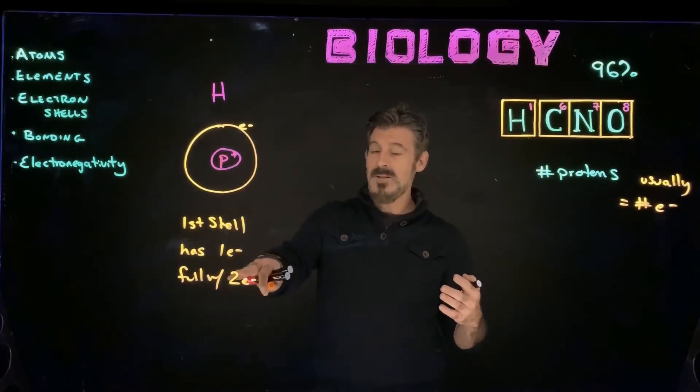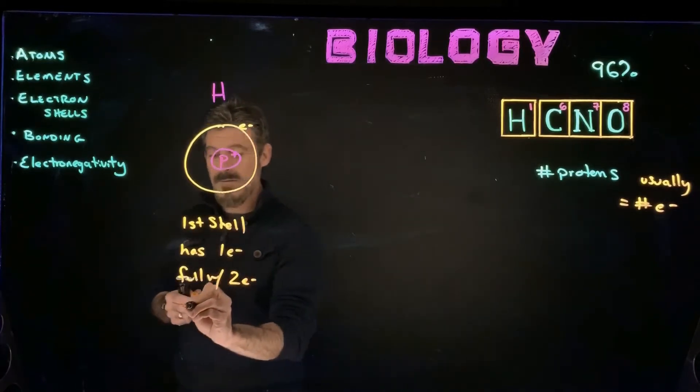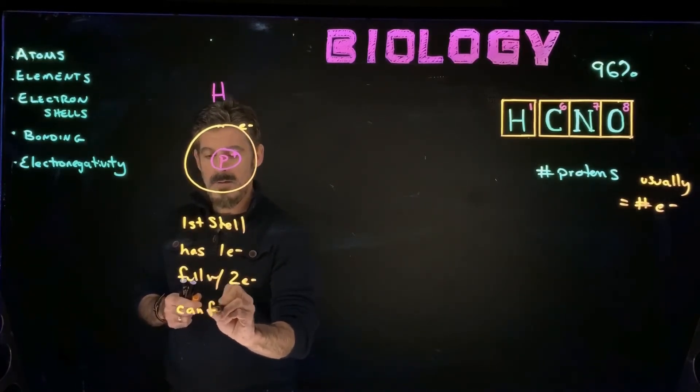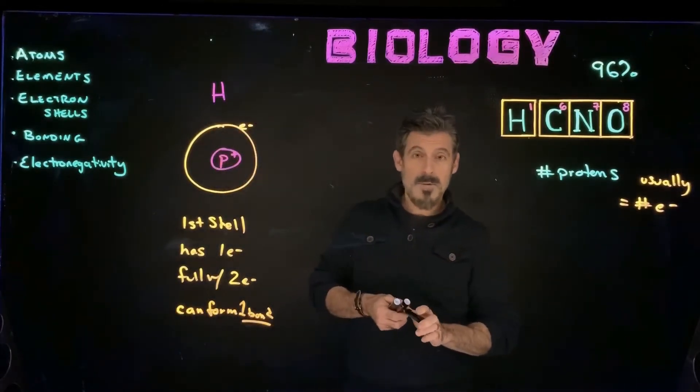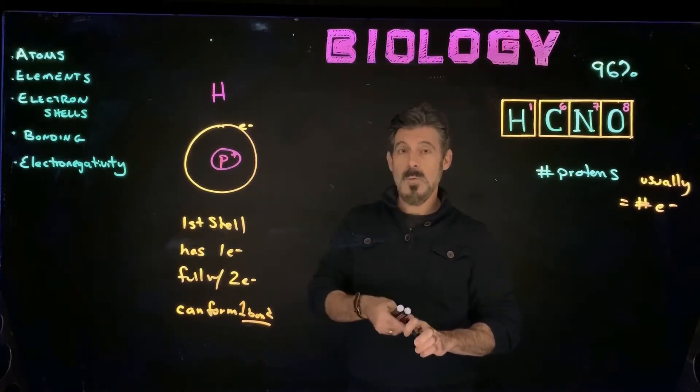So hydrogen needs one more, which means it can form one bond. Just one. It's not going to form two bonds or three bonds. It's only going to form one bond because it needs the one electron.